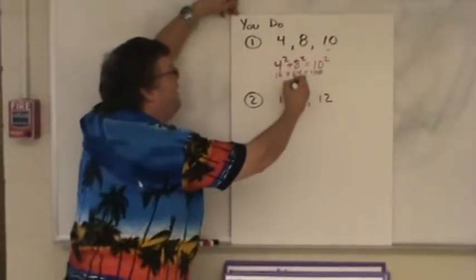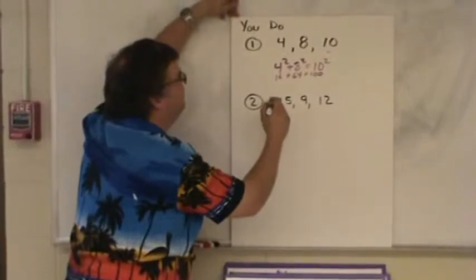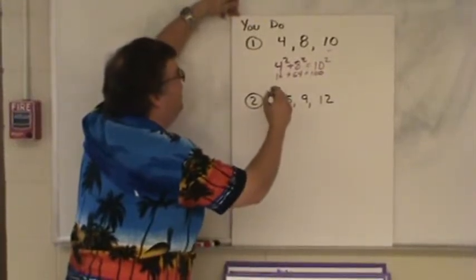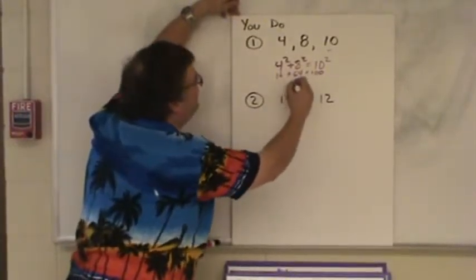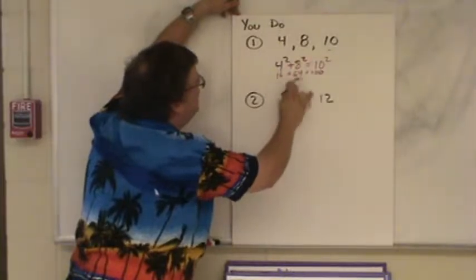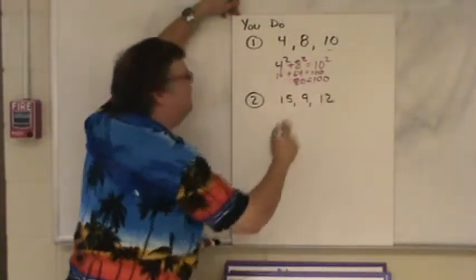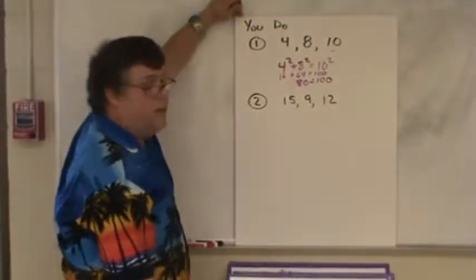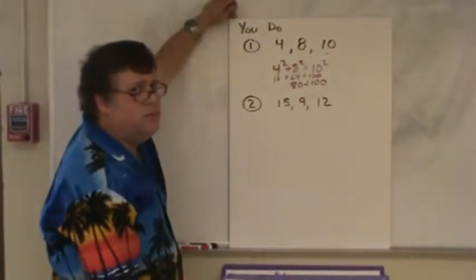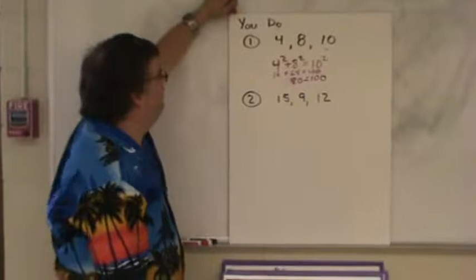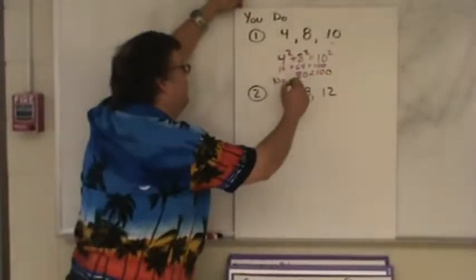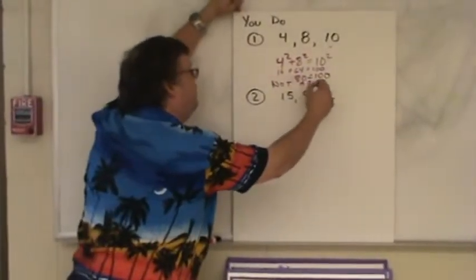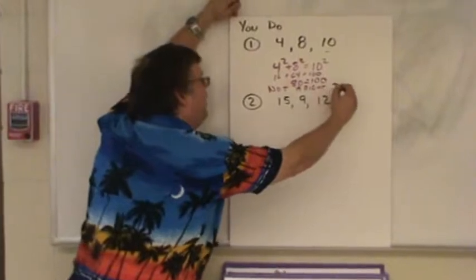Add these together. And I get 80 equal to 100. When I compare those, are they equal? No. So this is not a right triangle.